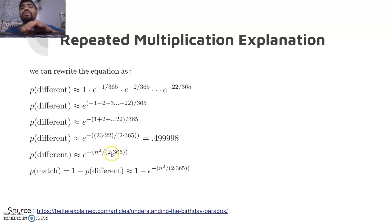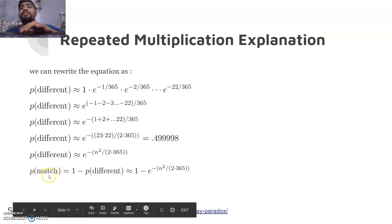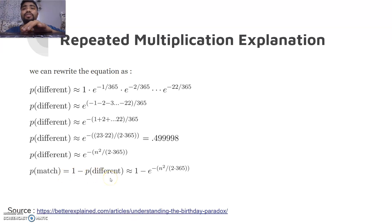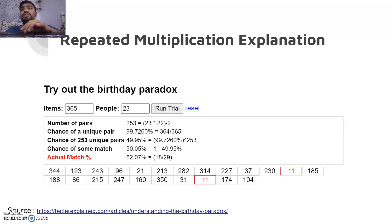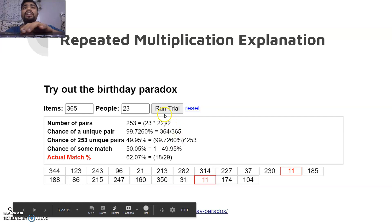Therefore, the probability of a match — which is 1 minus the probability of all different birthdays — results in more than 50% chance. This is illustrated with a simulation on betterexplained.com.